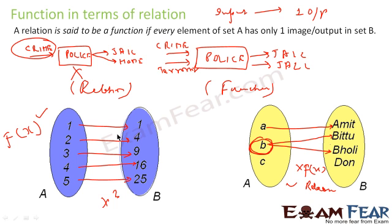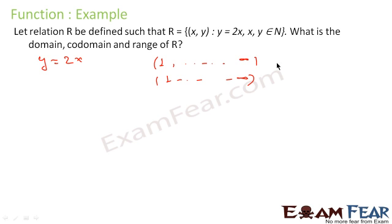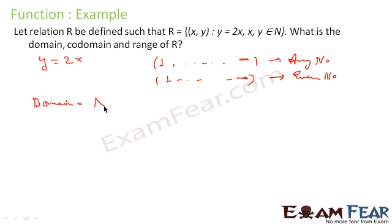Here we have a relation y = 2x where both x and y are natural numbers. y can be anything from 1 to infinity, and so can x. But since y = 2x, x can be any natural number while y will always be an even number. So the domain is the set of natural numbers. The range — the output — is always even, so range is the set of even natural numbers.